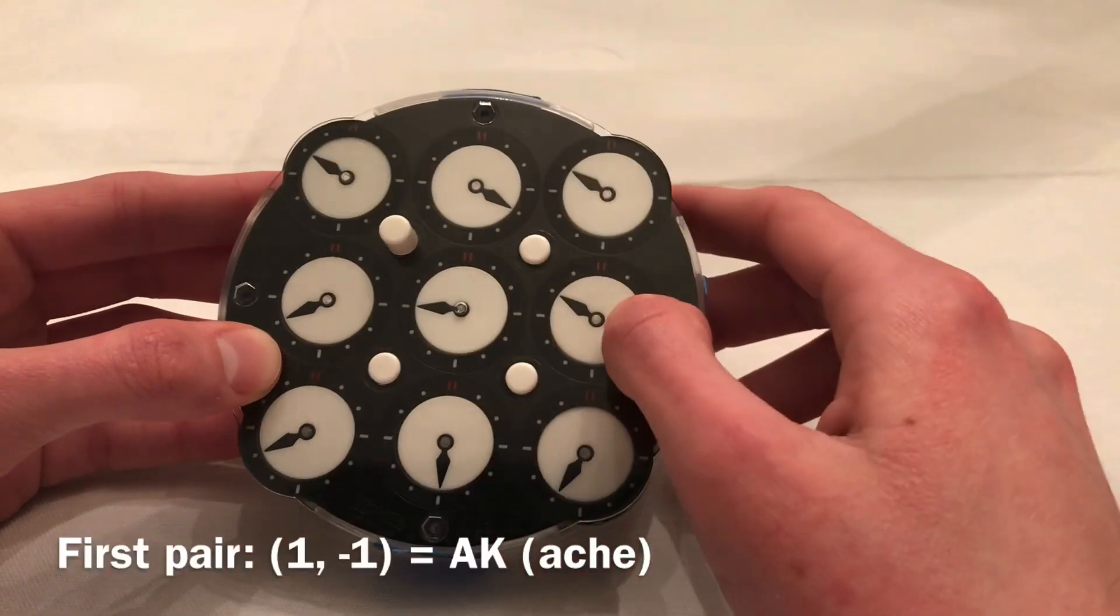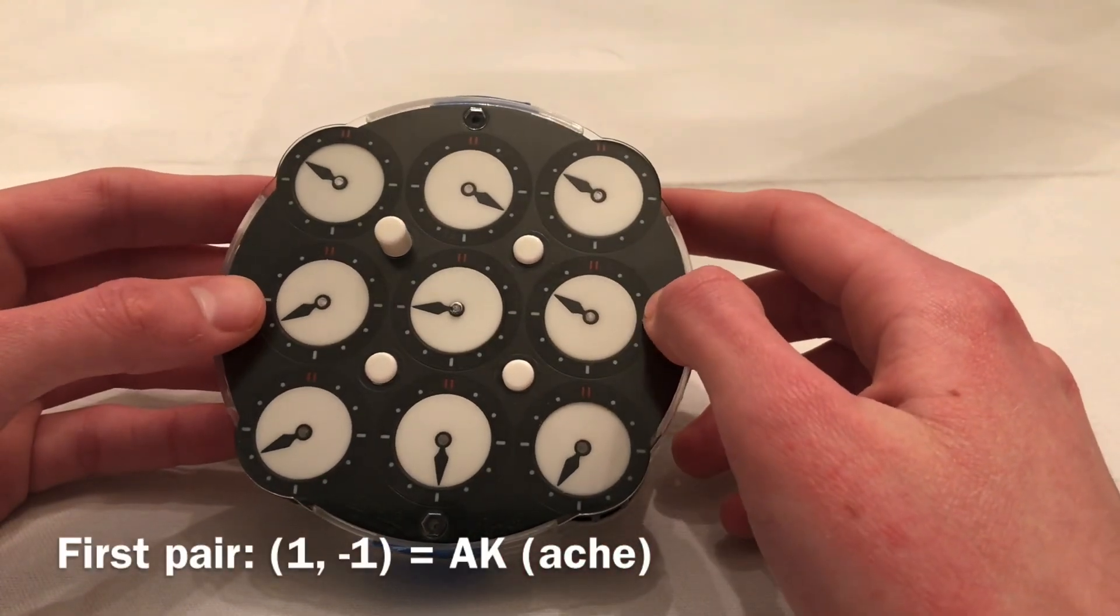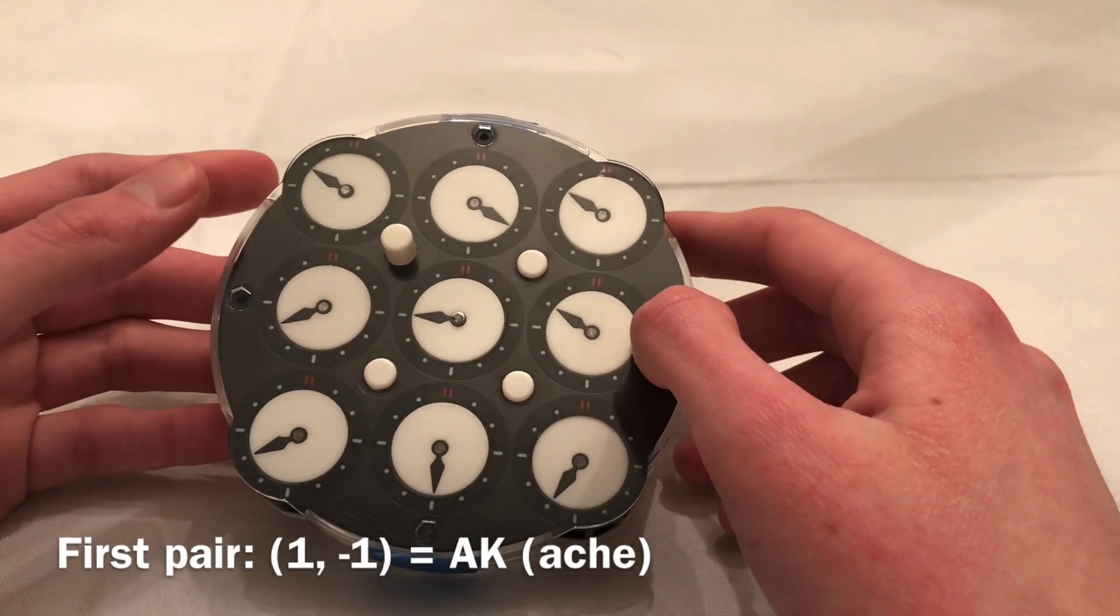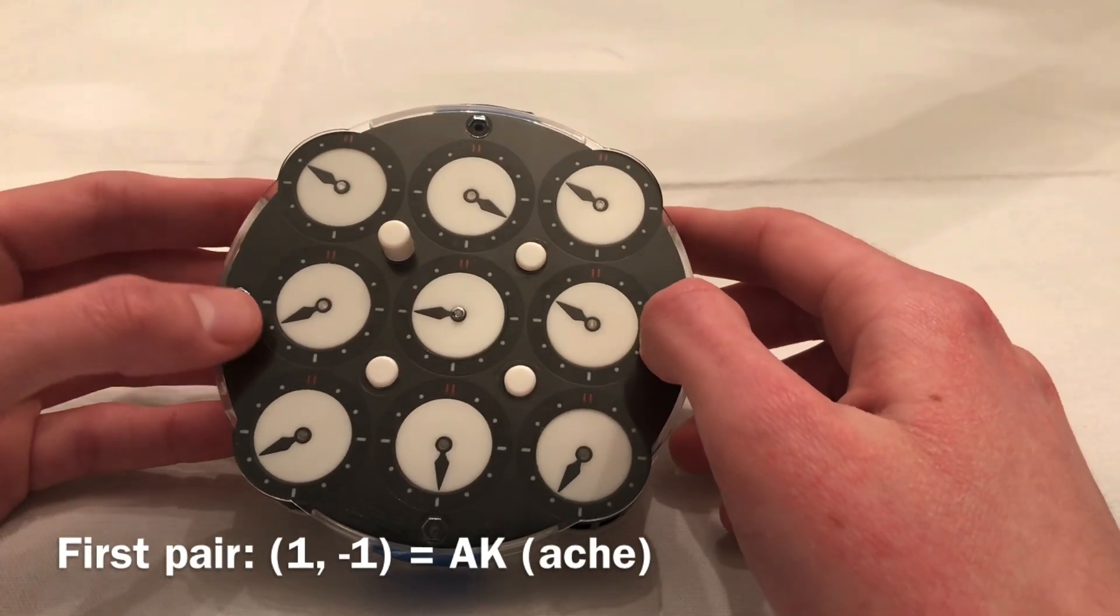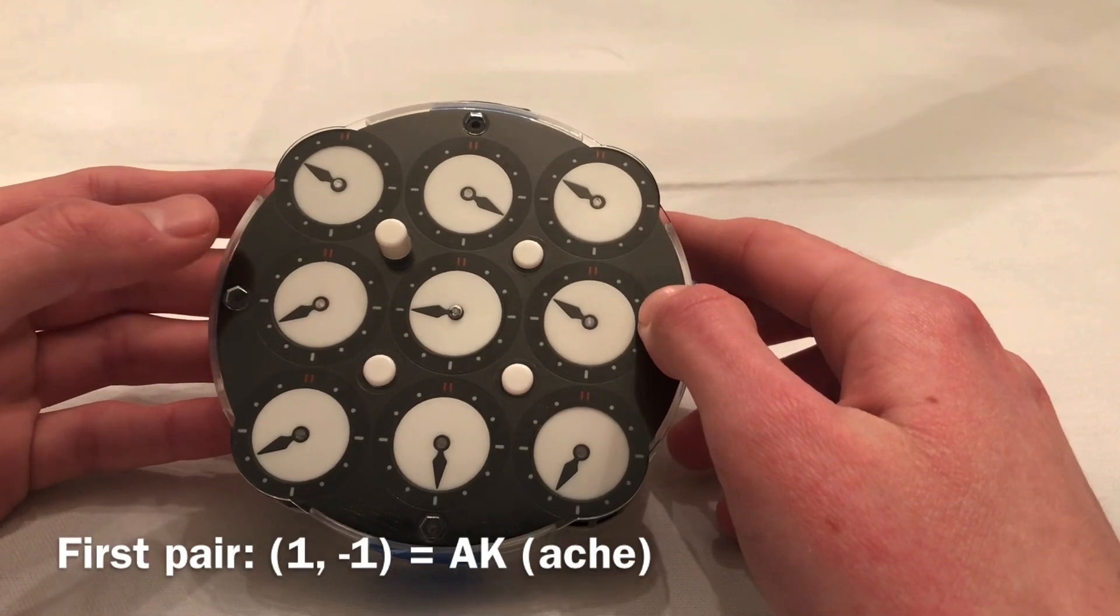So that first pair, the first part was 1, which is a, and the second part was negative 1, which is k. So, my word I'd memorize would be ache.